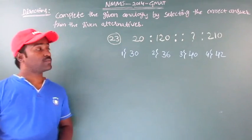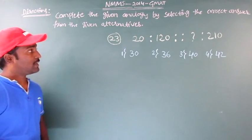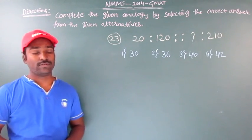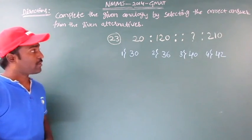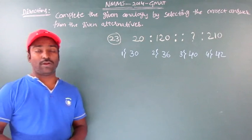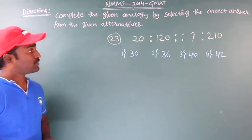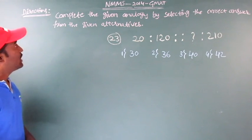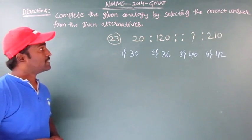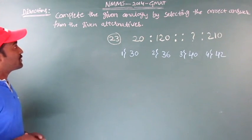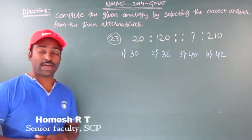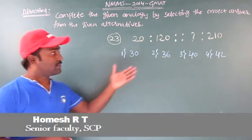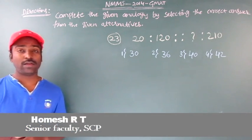Okay friends, here is problem number 23 and this problem comes under topic number analogy. We have to read the given direction first: complete the given analogy by selecting the correct answer from the given alternative. So we have to complete the analogy by selecting one of the given four options, and that will be the right answer for this question.